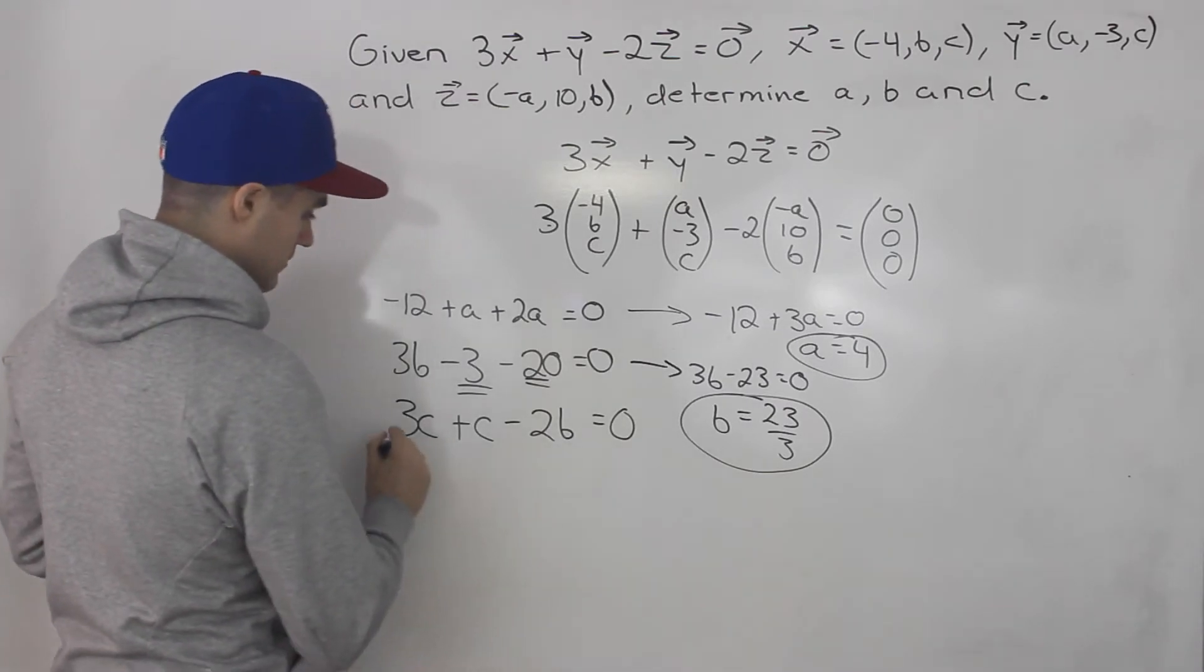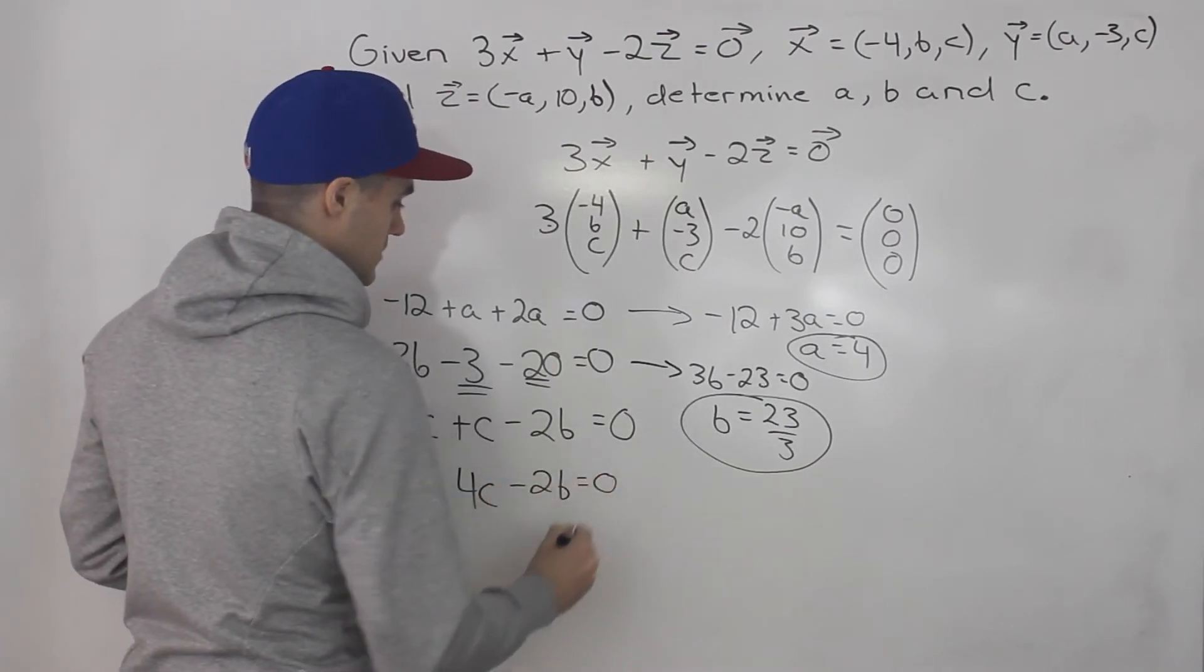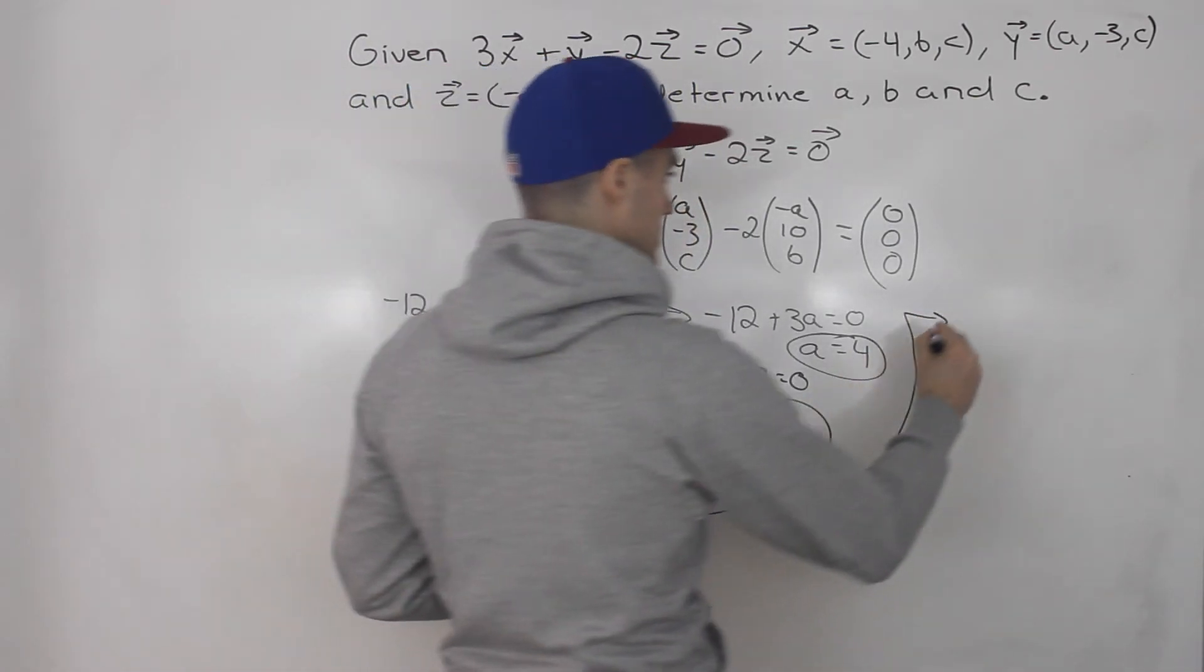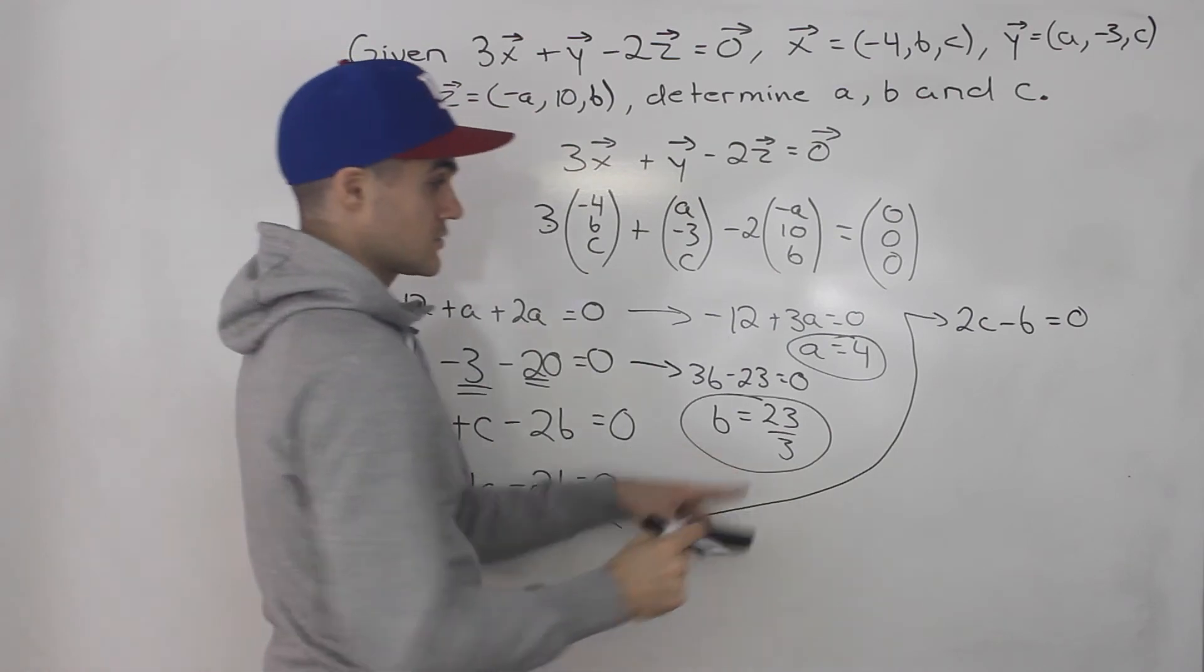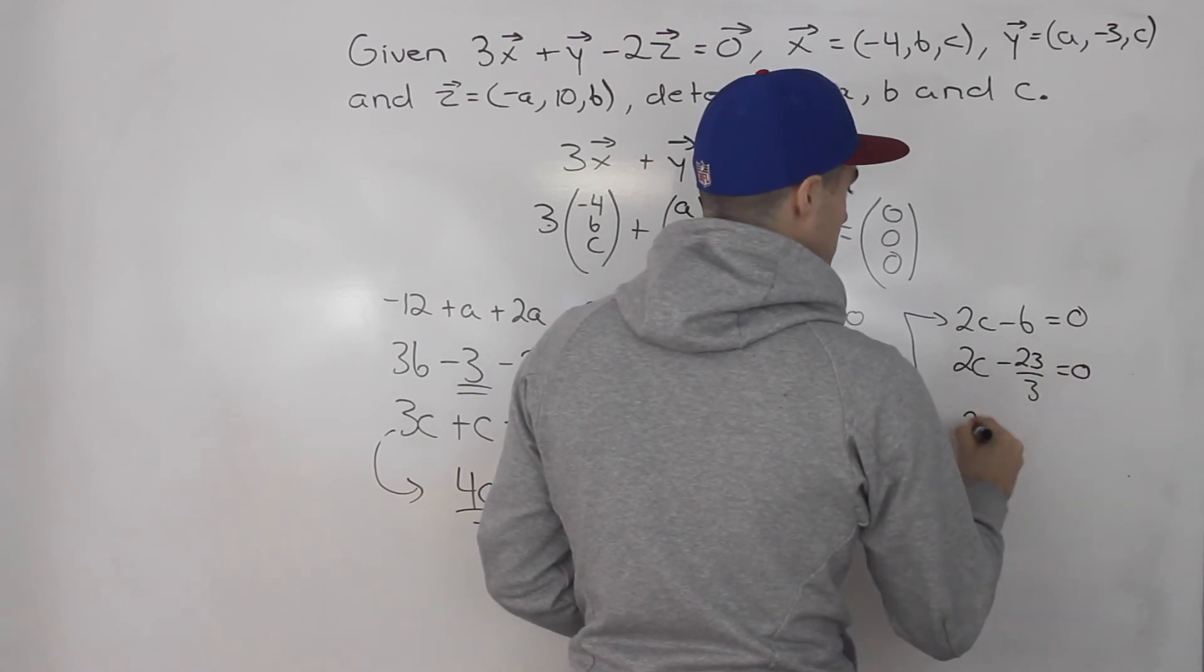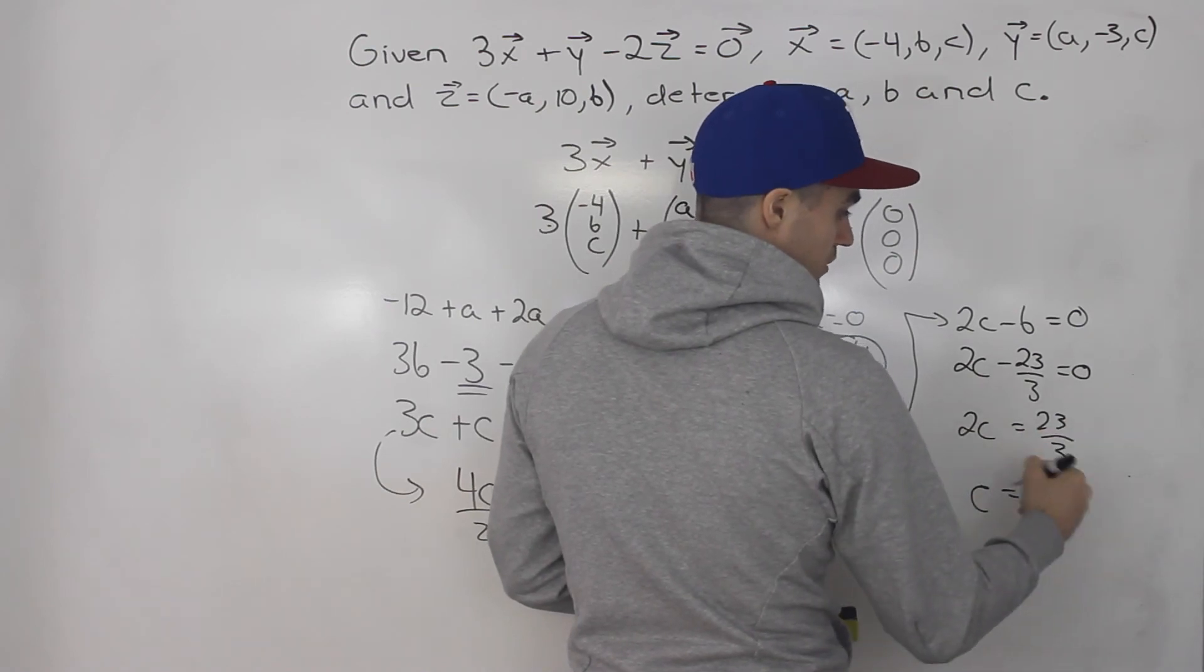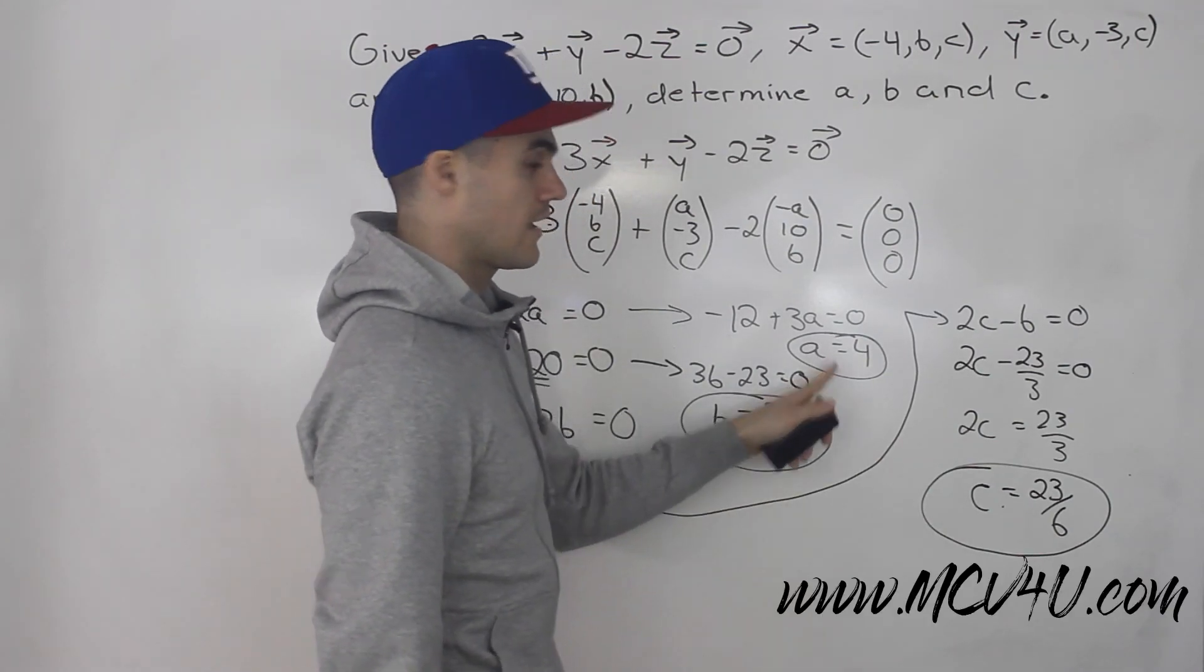And then with this equation here, this would simplify to 4c minus 2b equals 0. Notice how we could divide both sides by 2 to simplify it. So let's rewrite this over here. We'll have 2c minus b equals 0. And then notice we could plug in 23 over 3 for b. So we'll have 2c minus 23 over 3 equals 0. So that means 2c equals 23 over 3. And then when we divide both sides by 2, that's like multiplying it by 1 over 2. So we'll have c equals 23 over 3 divided by 2, which is 23 over 6. So c is 23 over 6, b is 23 over 3, a is 4.